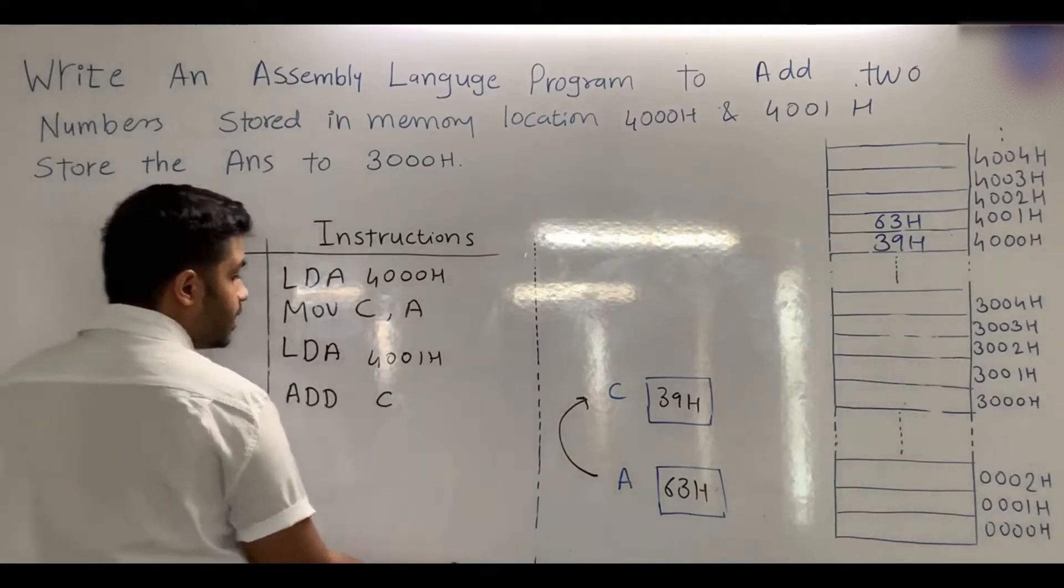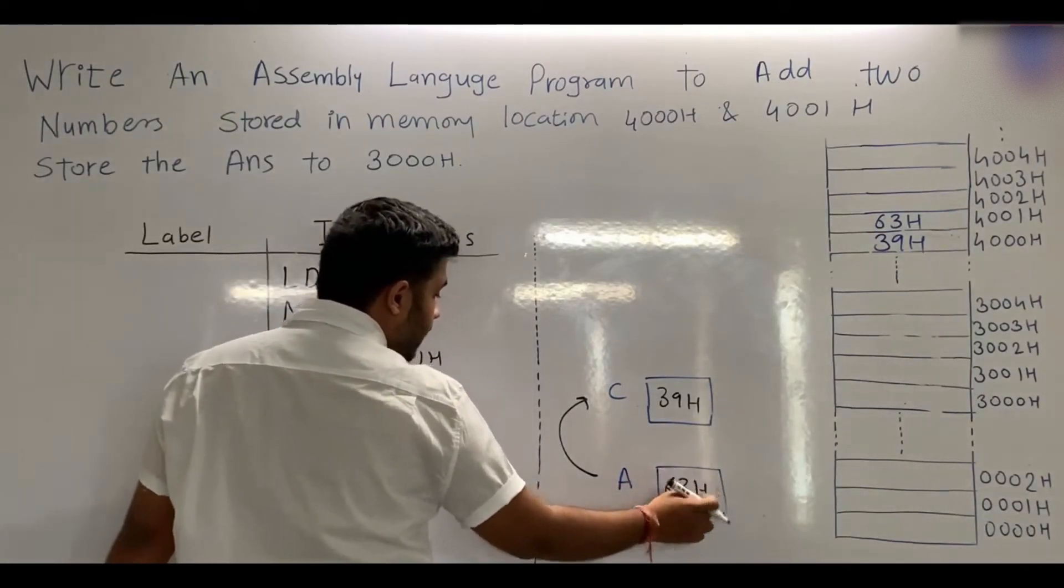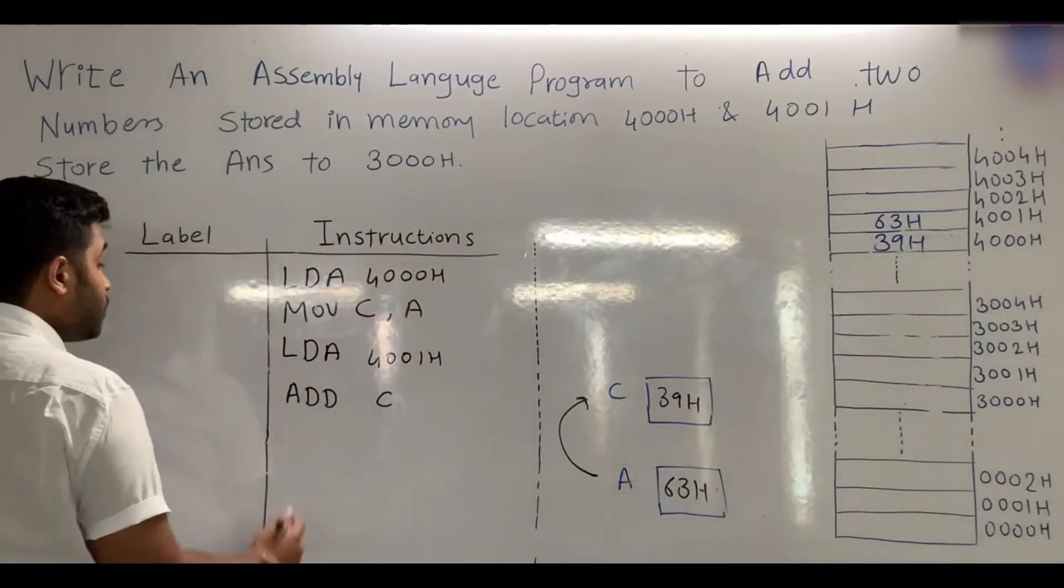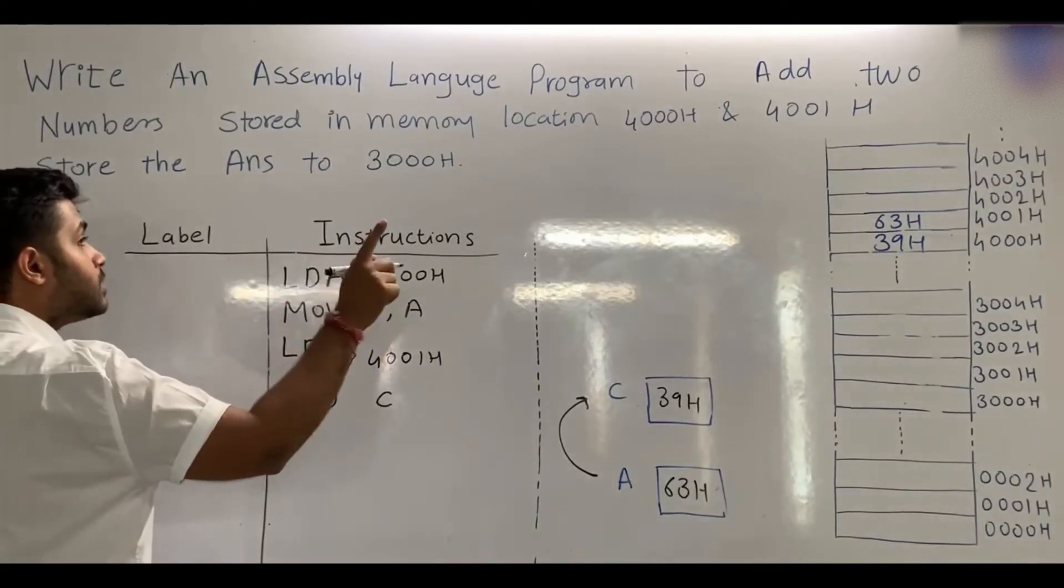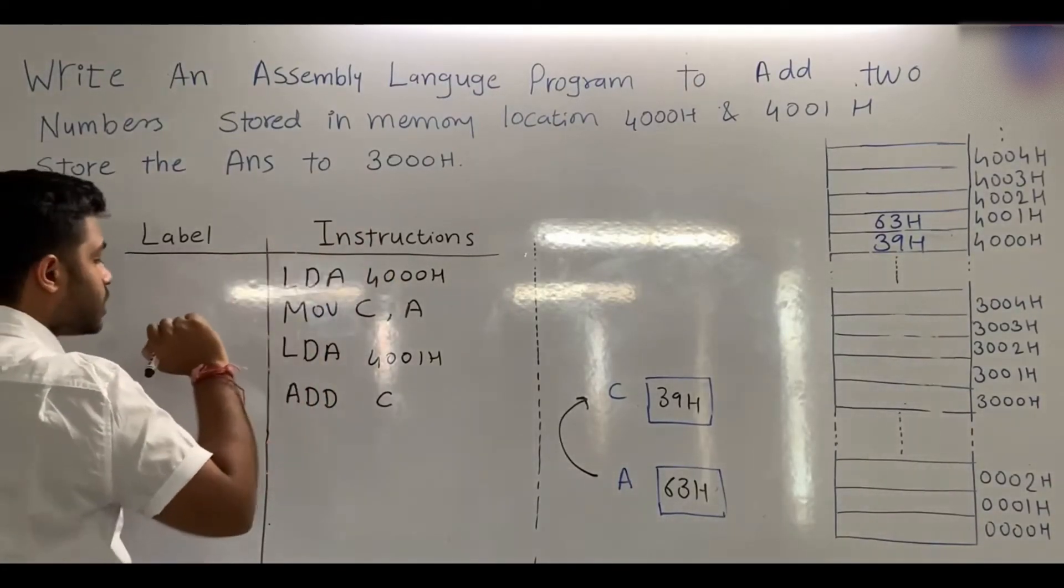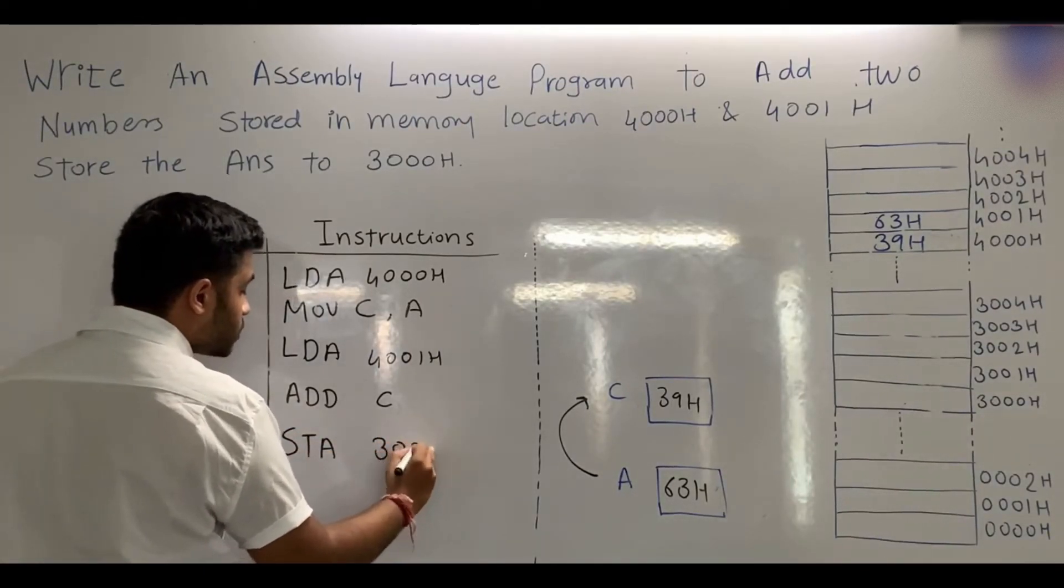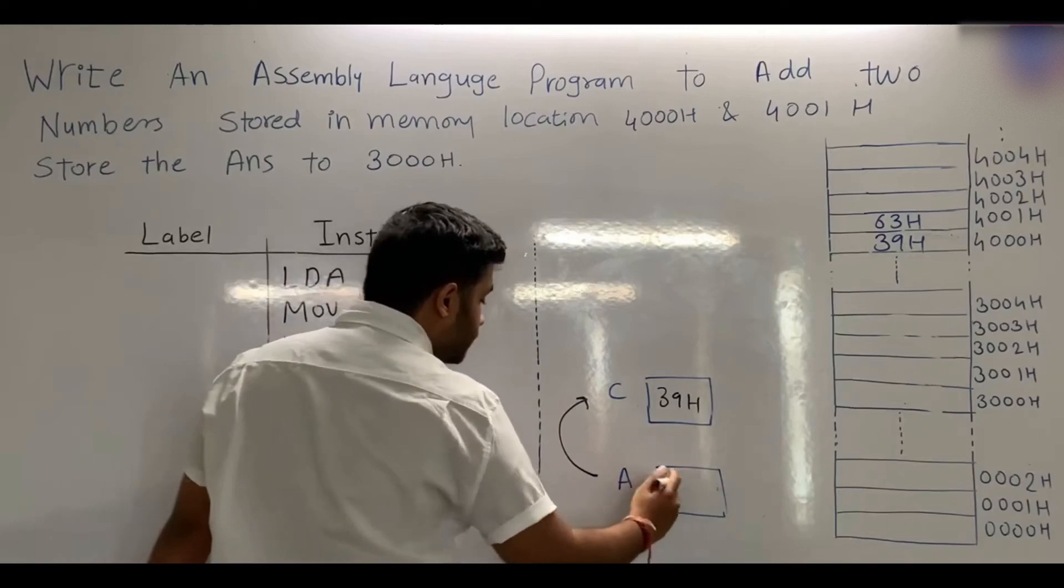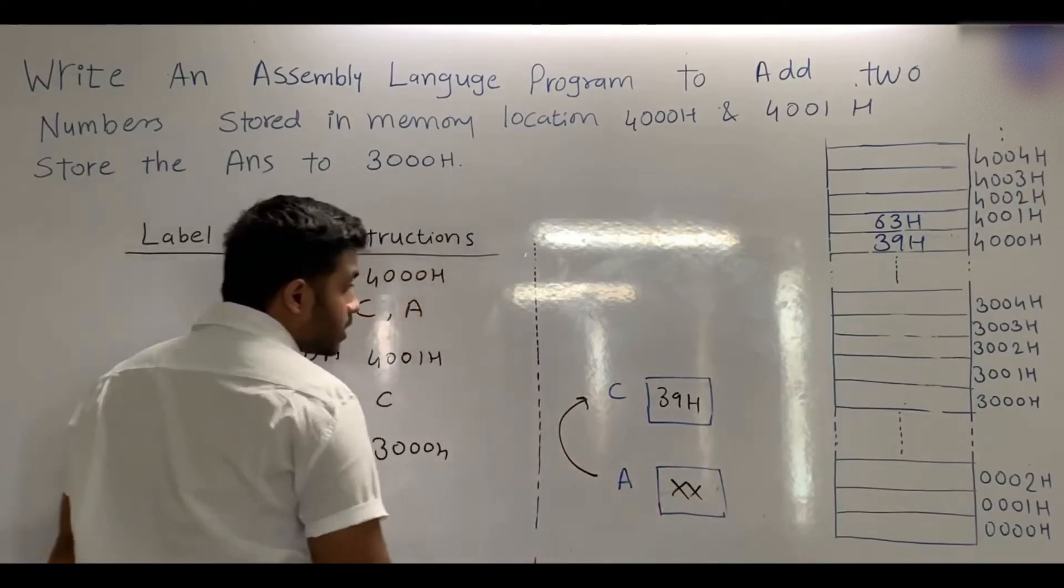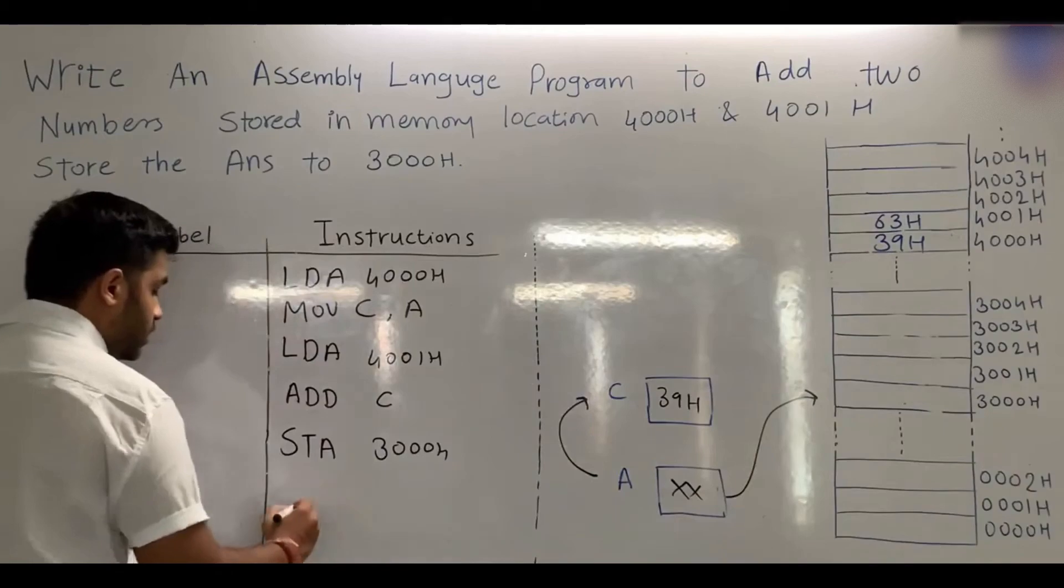After that, we have to store the answer to memory location 3000H. For that, we will use the instruction STA 3000H. Whatever answer we have got in the accumulator will be stored to 3000H.